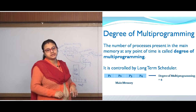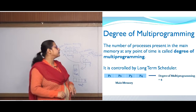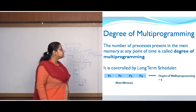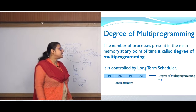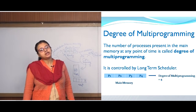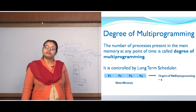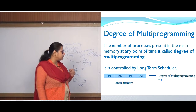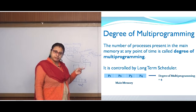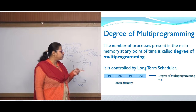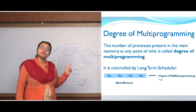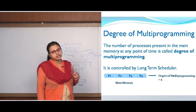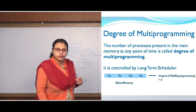Here comes the degree of multiprogramming. The number of processes present in the main memory at any point of time is called the degree of multiprogramming. It is controlled by the long term scheduler. In this main memory we have four processes P1, P2, P3, and P4 — therefore the degree of multiprogramming is four.